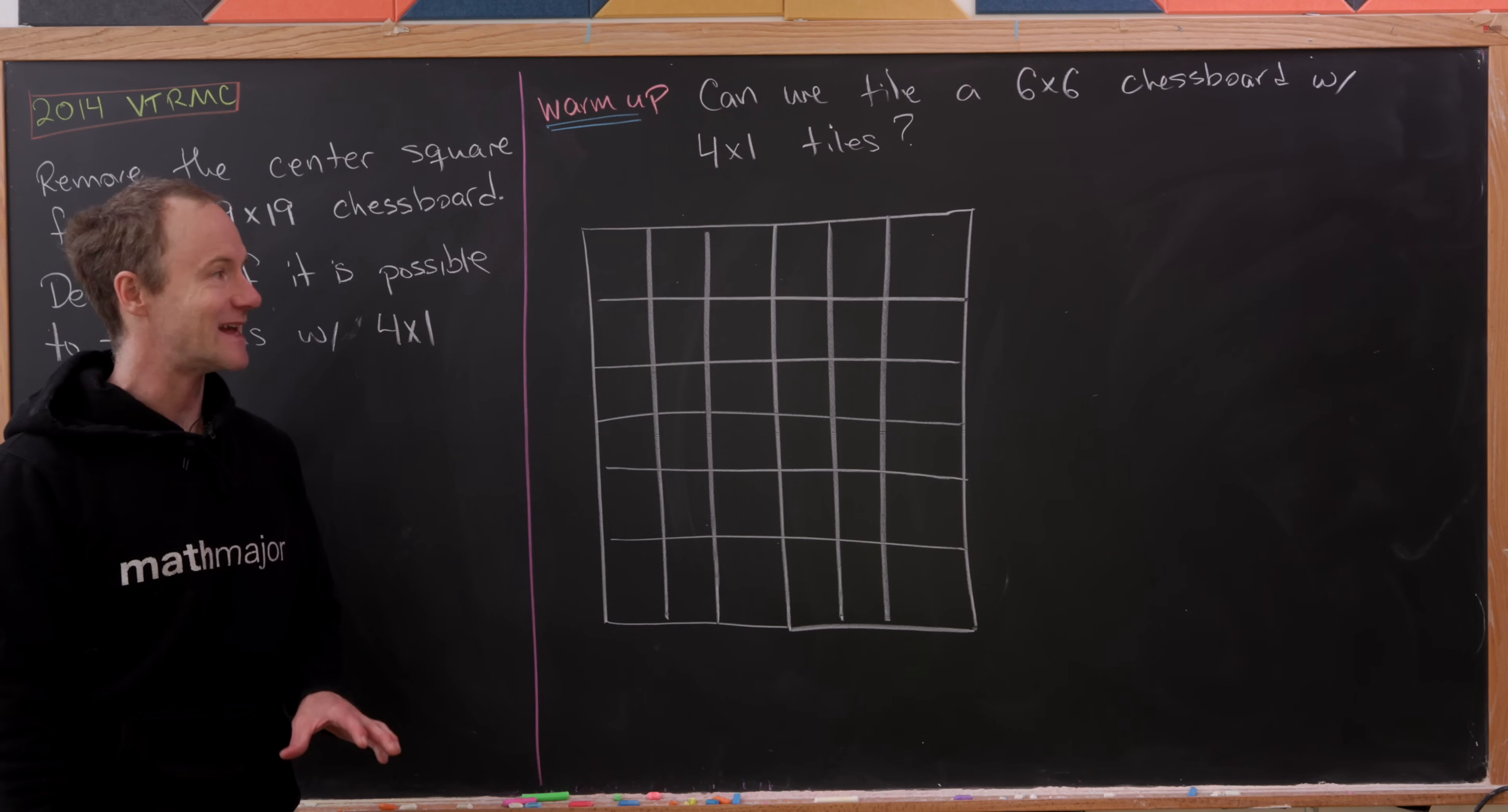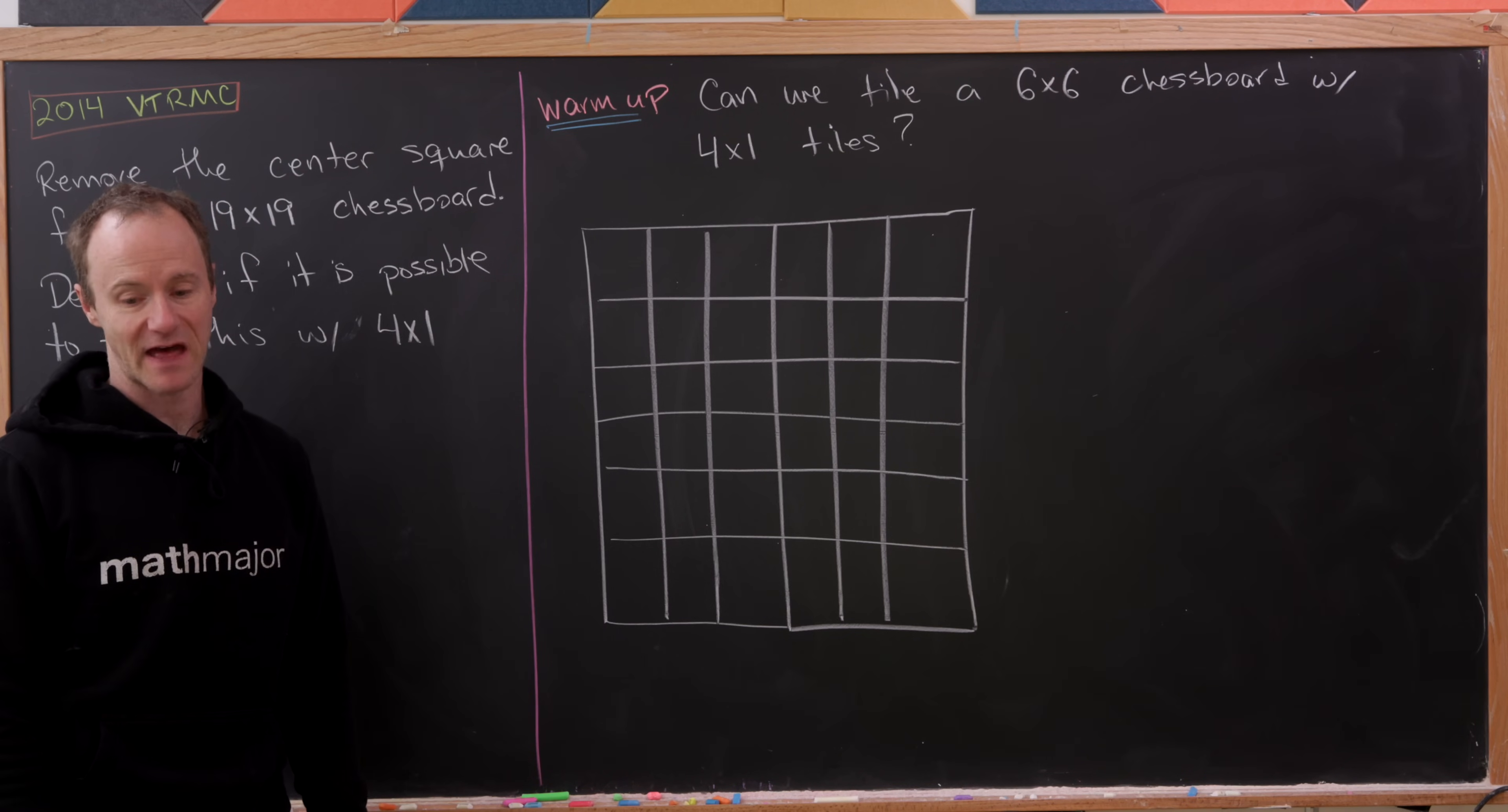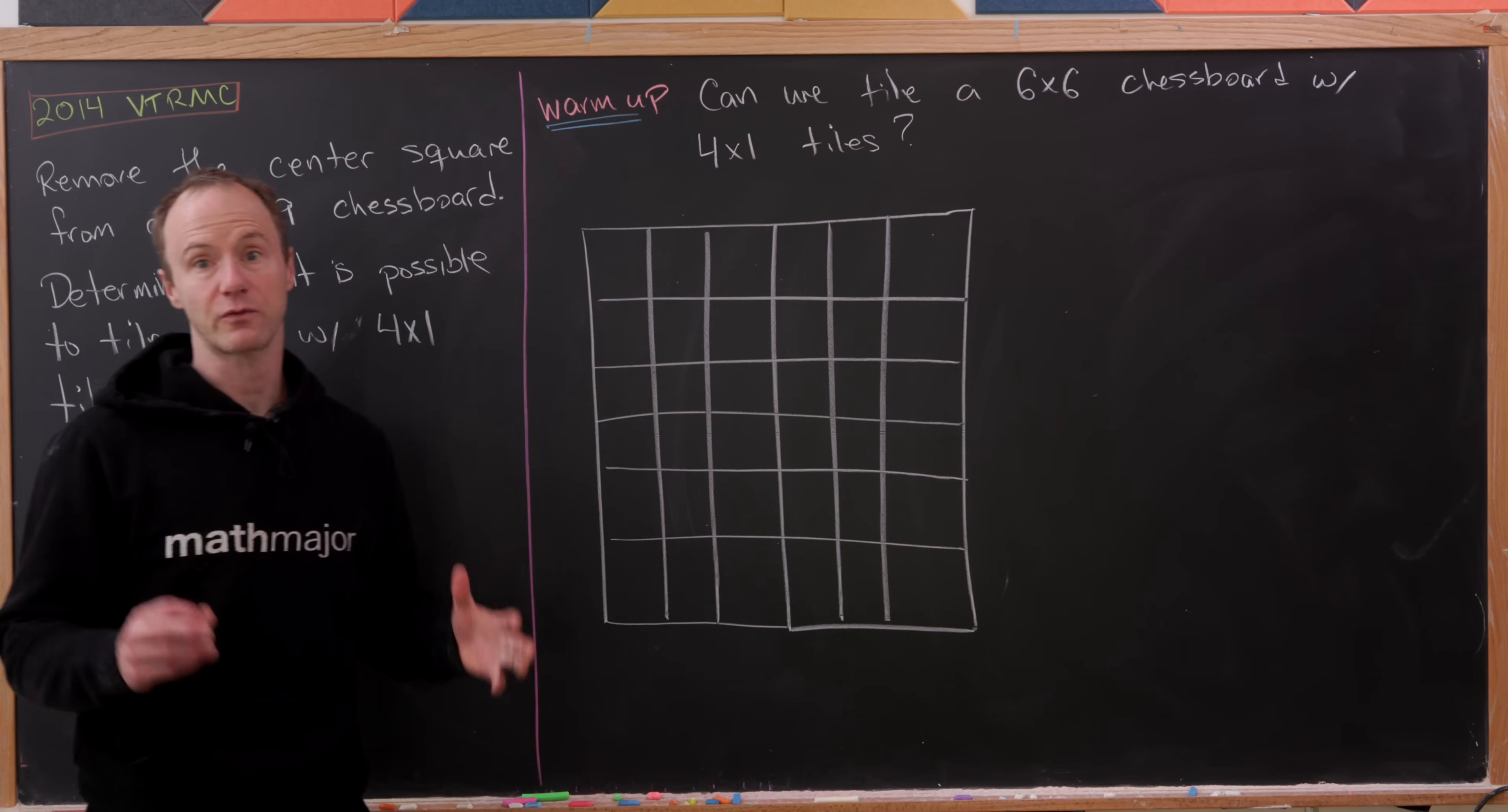The idea is to assign every square on this chessboard a number, and then the argument will be built out of that assignment. Since we're working with 4x1 tiles, it kind of hints towards using maybe fourth roots of unity.